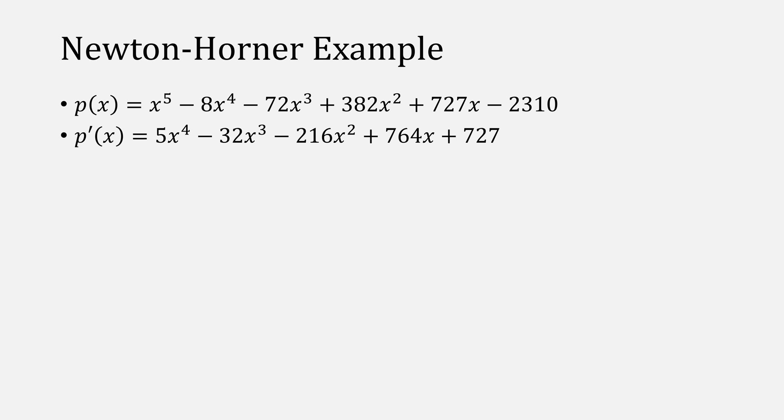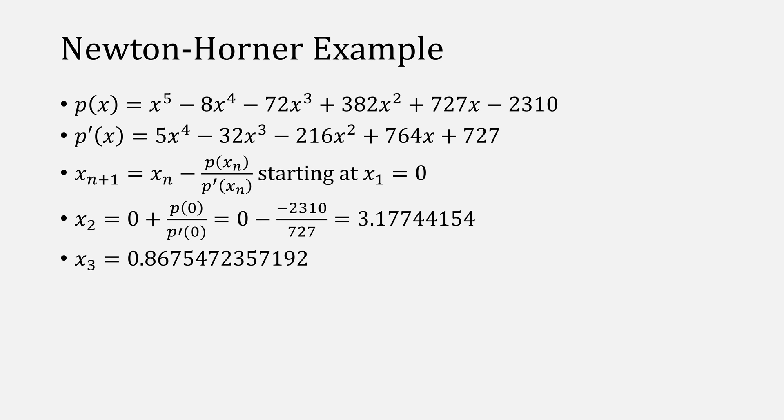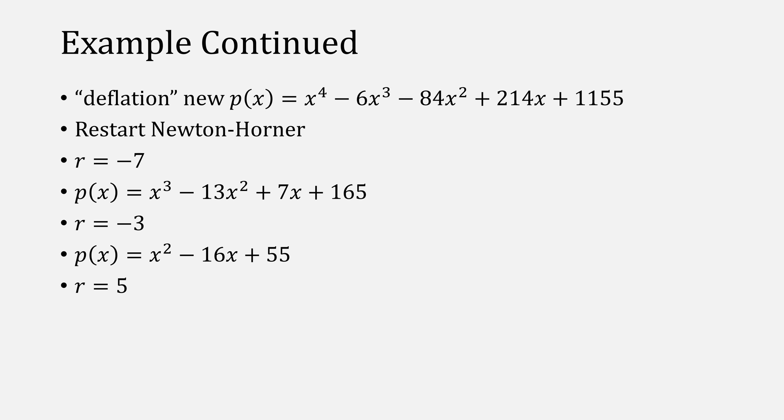Let's take our example polynomial, find the derivative, in this case we'll use power rule, and plug it into Newton's Horner method starting at zero. The first iteration gives us 3.17, the second 0.86, the third 2-something, until we get to 1.99999. In this case, we'll actually want to round the root to be 2, because that'll give us a better answer. Then we'll deflate our original polynomial using the root that we found. In this case, we'll make the quotient that we found using 2 be our new polynomial. Restart the Newton-Horner method, find a root of negative 7. Deflate again, find the root, deflate, find the root, deflate, find the root. This gives us all of our roots of negative 7, negative 3, 2, 5, and 11.